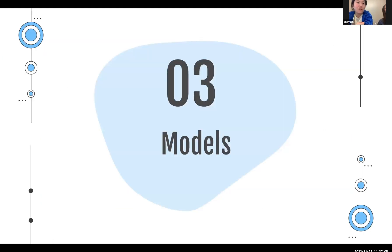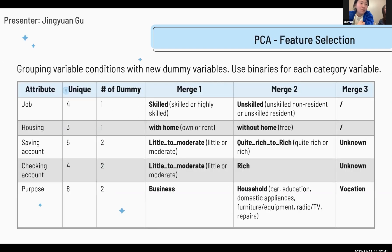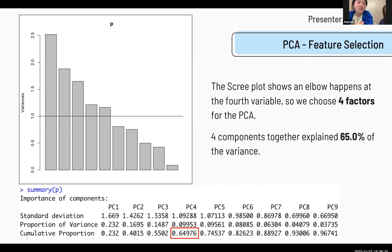With all data preparations complete, we move to our models. The first model is PCA for feature selection, which provides variables for linear regression to predict credit limit. We use classification to identify risk level, and clustering for client segmentation. We apply PCA for dimension reduction, and since creating dummy variables for all categorical variables is redundant, and the initial KMO was less than 0.5, we group a few conditions into one dummy variable. After grouping, KMO becomes greater than 0.5, confirming the need for PCA. From the scree plot, the elbow occurs at the fourth component, so we choose four components.